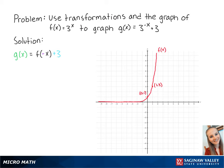g of x is equal to f of negative x plus 3. The negative x means that we will reflect the graph across the y-axis.